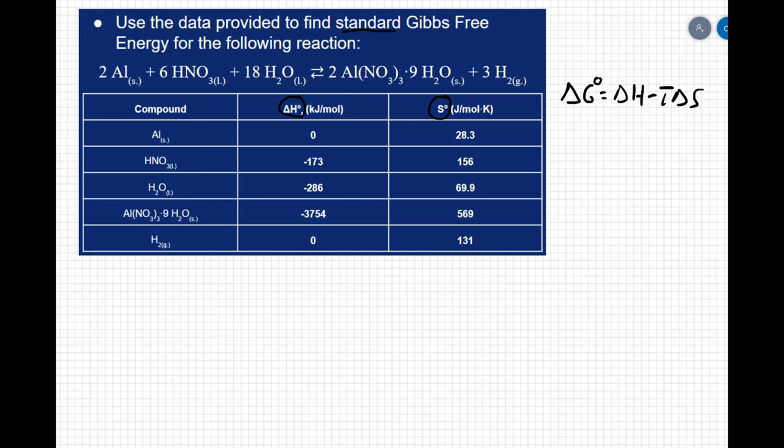Remember standard conditions mean 25 degrees Celsius and 1 atmosphere. So if I want to find my delta G not I'm going to use my delta H not, my delta S not, and my temperature is going to be 298 Kelvin or 25 degrees Celsius. Now to find delta H I can do the sum of my heats of formations of the products minus the sum of the heats of formation of reactants.